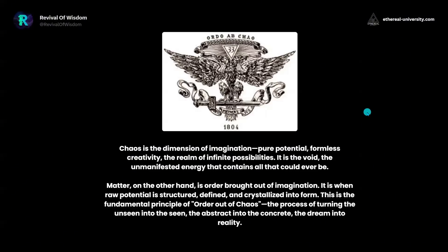This is the 33rd degree of Freemasonry — the Scottish Rite logo — and it's called Order Ab Chao, Order Out of Chaos. Chaos is the zero, the infinite potential. Chaos is the dimension of the imagination. Imagination is the dimension of infinite potential, pure potential, fullness, creativity, and the realm of infinite possibilities. It is the void, the unmanifested energy that contains all that could ever be. That is the imagination.